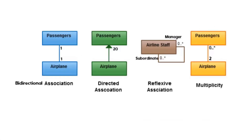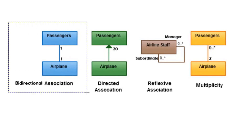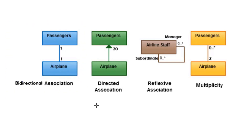Next we have multiplicity, which is the same as cardinality as explained in the other examples — cardinality one here, cardinality one here, cardinality 20, and so on. So now we are going to make the code for bidirectional association. To save time I have already written the code, so I'm just going to explain that code.